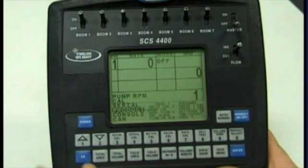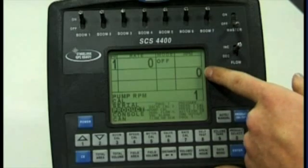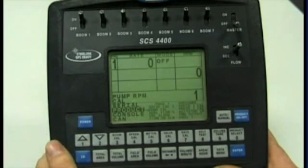Once you've entered this, you'll see RPM is now displayed in the top right hand corner, and below that you'll have a zero. This is where your pump RPM readout will appear.